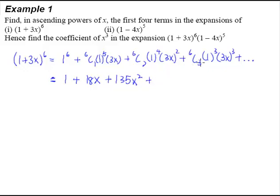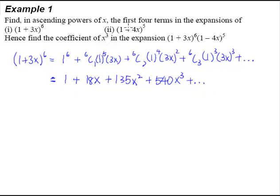Let us proceed to the next term, 6C3. From the calculator, 6C3 is 20. 3 cubed is 27, so 27 multiplied by 20 gives us 540x³. And we have dot dot dot behind to represent that there are more terms. This is our expansion — we have answered the first part of the question, the first 4 terms.